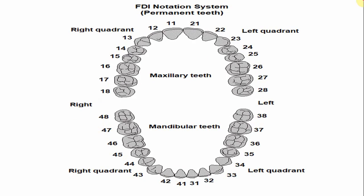In the FDI notation system, the number of the left mandibular third molar is 3, 8 — not 38. The 3 indicates the mandibular left quadrant and 8 is the tooth number. For the right side, the number is 4, 8 — not 48 — where 4 indicates the mandibular right quadrant and 8 represents the tooth number.